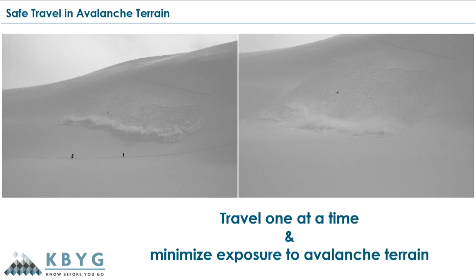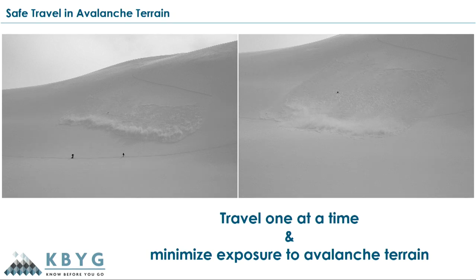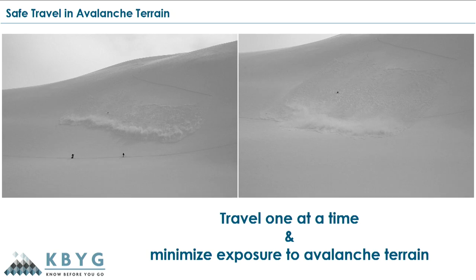When we're in avalanche terrain and have to be in it, we want to travel one at a time — this goes for ascending and descending. We want to cross avalanche paths spaced out or one at a time because in the event of an avalanche, we want to expose as few people as possible so we have more people to help with rescue. When descending, we want to ski one at a time and identify islands of safety and safe spots where we can regroup throughout the slope.